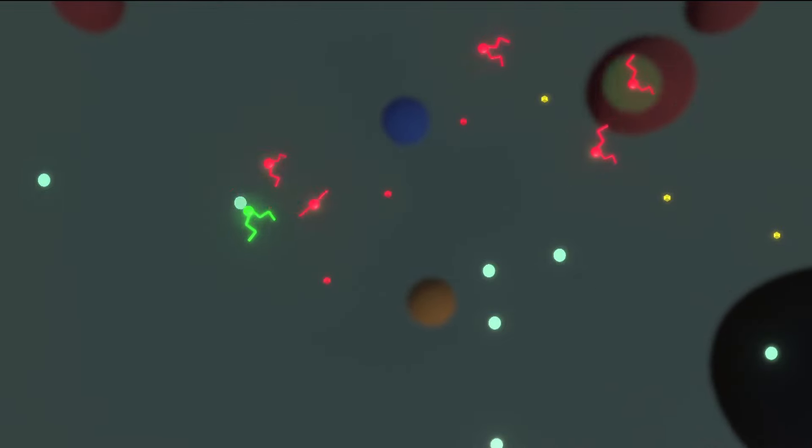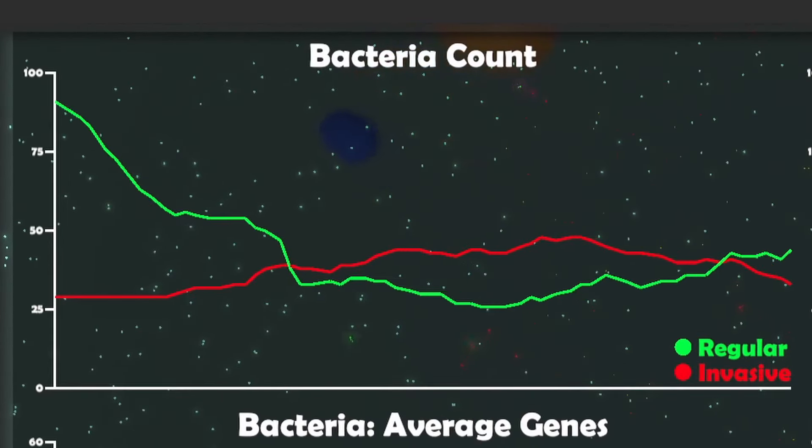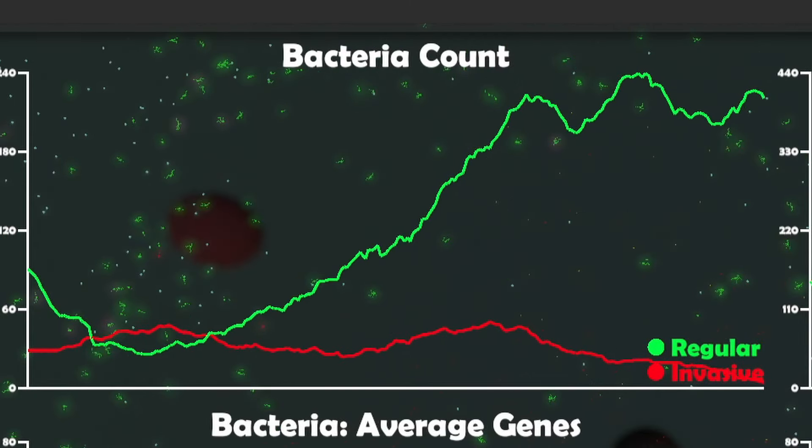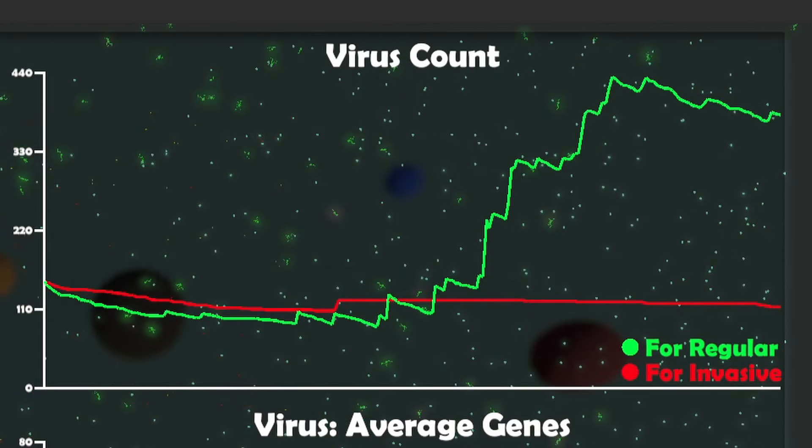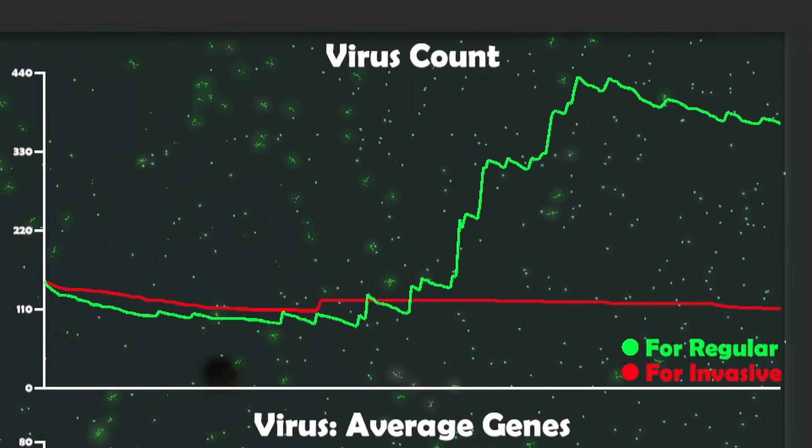I think these set of parameters worked really well. Here in the beginning, we can see the battle between the invasive and the regular bacteria affecting each other's populations. But then as the number of bacteria starts to rise, now the viruses start kicking in for the regular bacteria especially and keeping their populations in check. In fact, in this run, the invasive bacteria was actually wiped out.